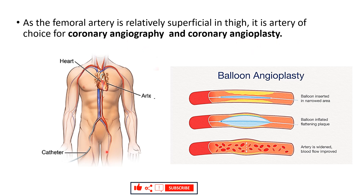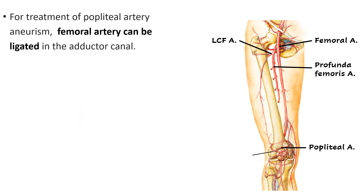Another clinically significant point: in the case of a popliteal artery aneurysm — a ballooning out with thinning of the walls of the popliteal artery that can lead to rupture — as treatment, the femoral artery can be ligated in the adductor canal. After ligation, blood will no longer flow directly from the femoral artery to the popliteal artery.